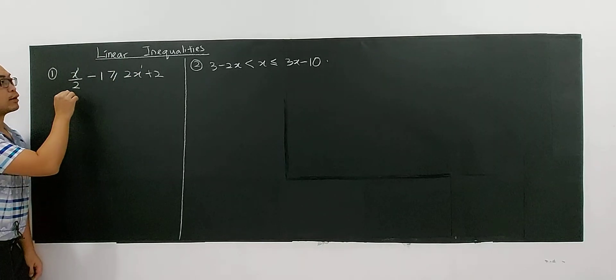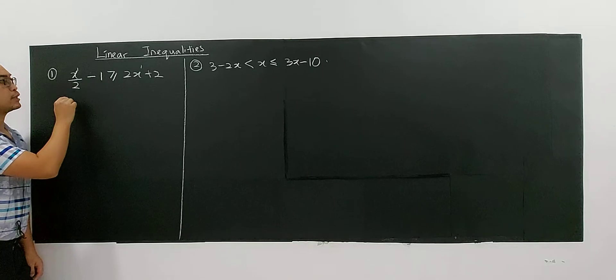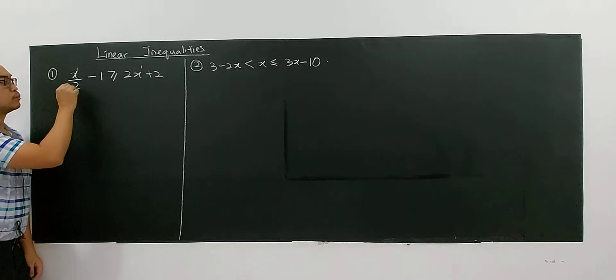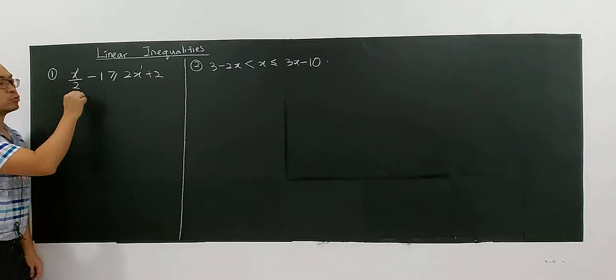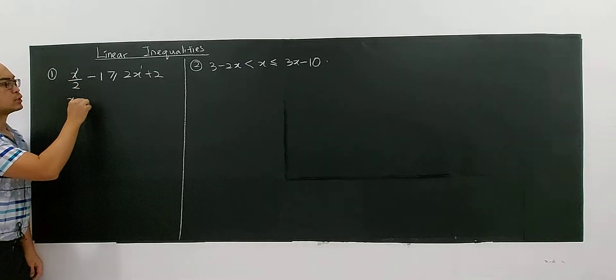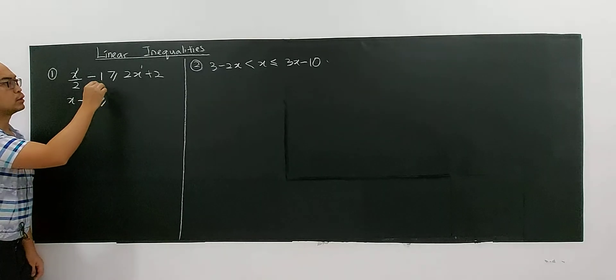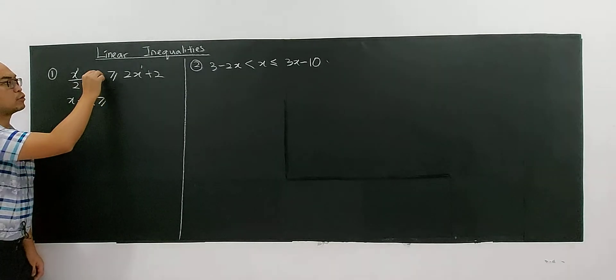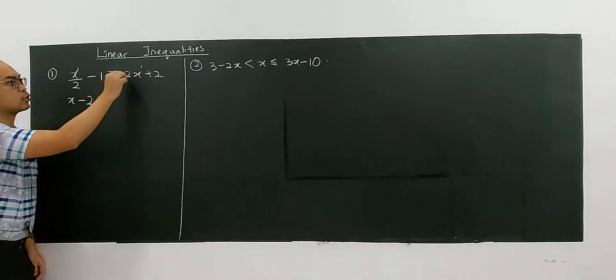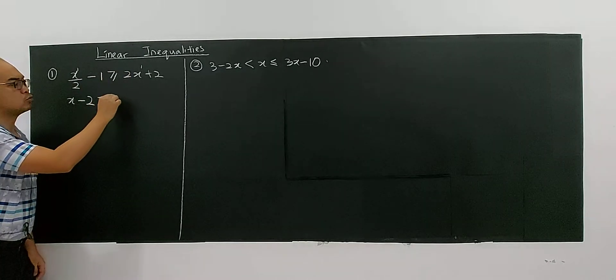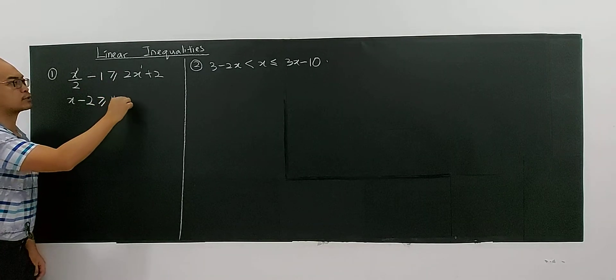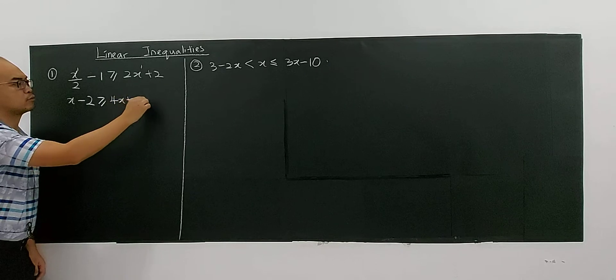So you multiply everything by 2, because there is an 'over 2' here. It's better for you to multiply everything by 2. So you multiply 2 here, this one also multiply 2, and it becomes 4x plus 4.